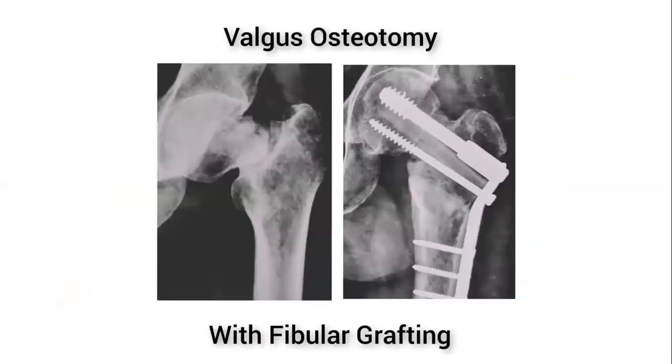Now this is a common example in a fractured neck of femur in which we've done a valgus osteotomy and also added on an extra fibula to give some bone strut. So one of the commonest examples where we use this valgus osteotomy today.